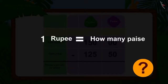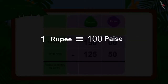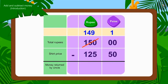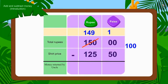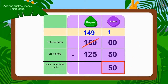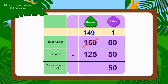How much is Rs. 1 worth? 100 paise. We will borrow 1 rupee out of Rs. 150. We will show it by crossing out Rs. 150 to Rs. 149. Now, if we subtract 50 paise of Rs. 125.50 from the borrowed 100 paise, then how many paise are left? That's right — 50 paise.